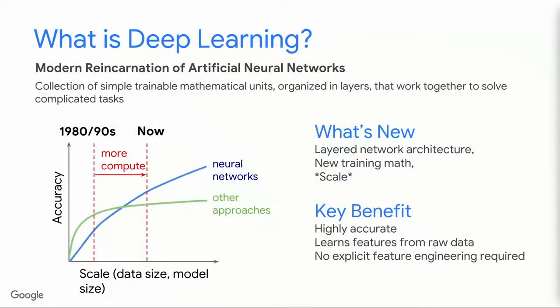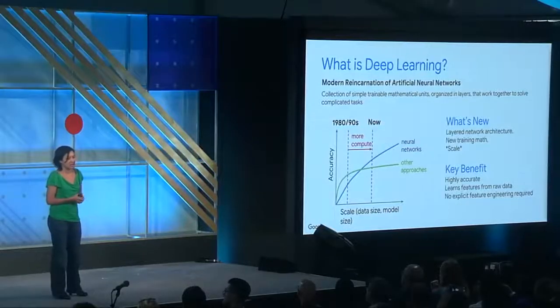What is deep learning? It's a modern reincarnation of artificial neural networks, which was actually invented in the 1960s. It's a collection of simple trainable units organized in layers, and they work together to solve complicated tasks. With smaller data sets and limited compute — what we had in the 1980s and 90s — other approaches generally work better. But with larger data sets, larger model sizes, and more compute power, neural networks work much better. There are just two takeaways from this: deep learning trains algorithms that are very accurate when given enough data, and deep learning can do this without feature engineering.